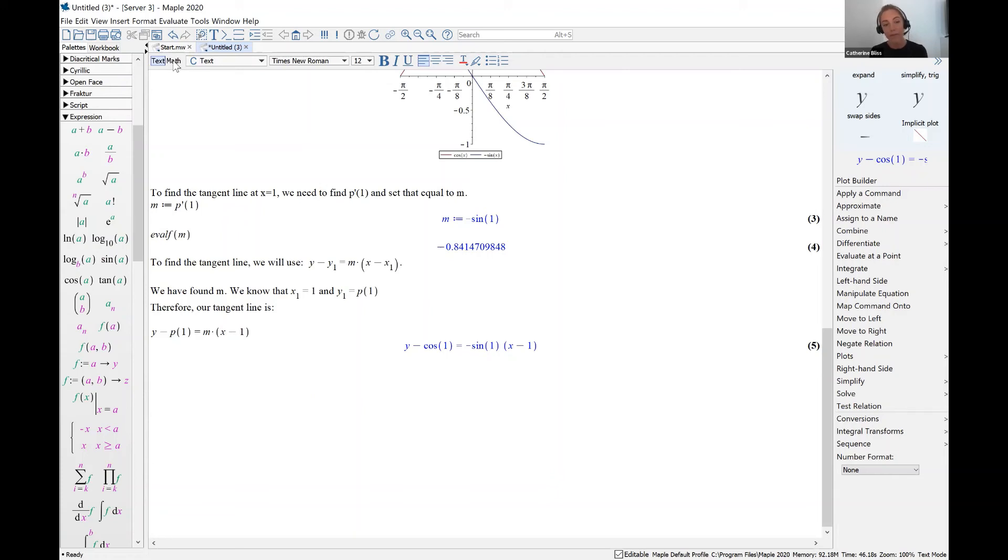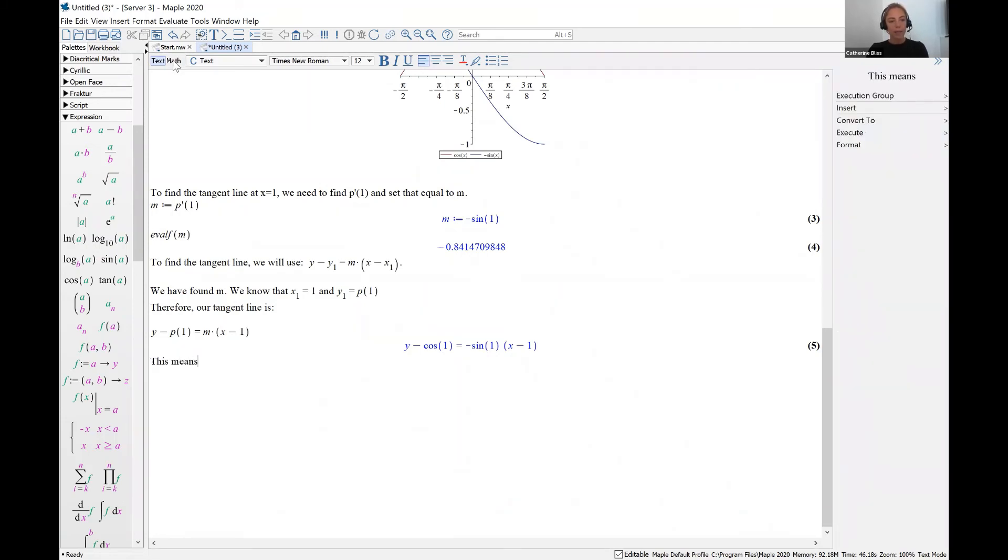Alright, so this means that y equals negative sine of one times x minus one plus cosine of one. Let's plot this with our function p of x. I'll go into math mode.